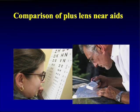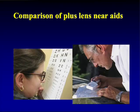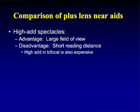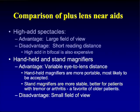Comparing near aids: high plus adds give both hands free with a wider field of view but a shorter working distance. Handheld magnifiers offer variable eye-lens distance but require one hand and are harder for patients with tremor or arthritis, with a smaller field of view. Handheld magnifiers are more portable; stand magnifiers are more stable.